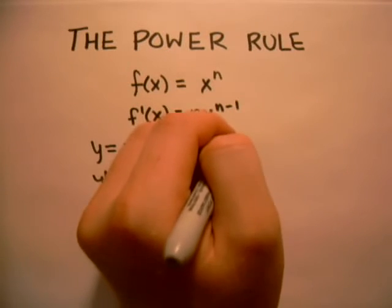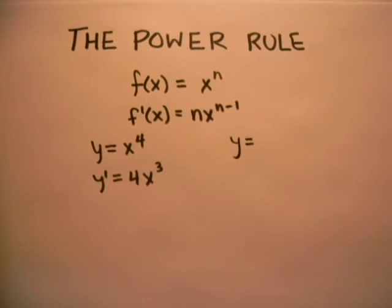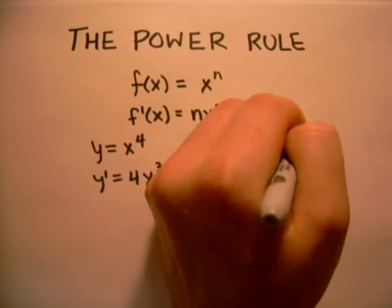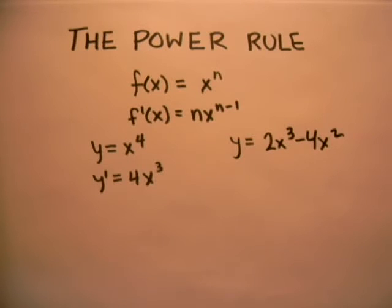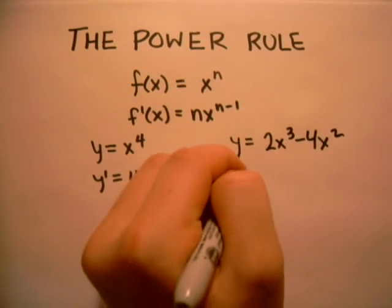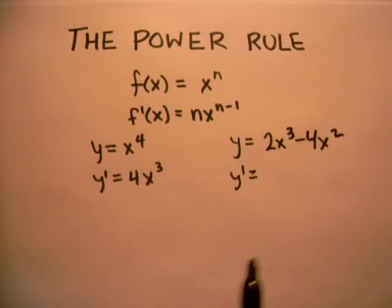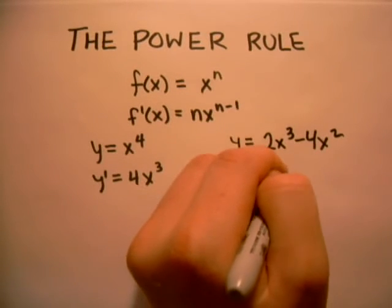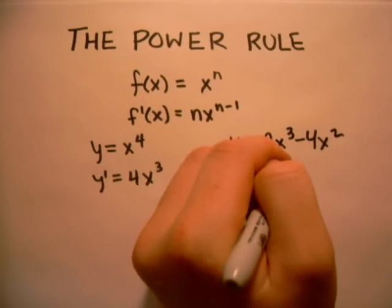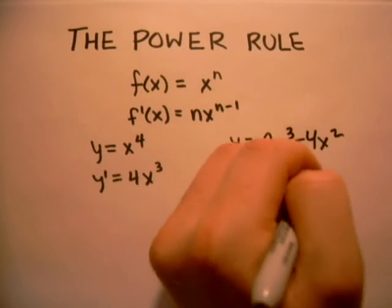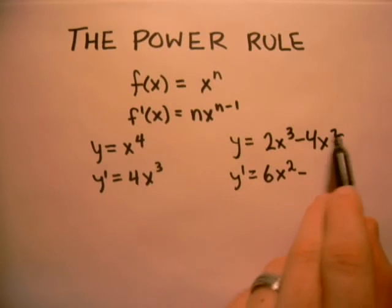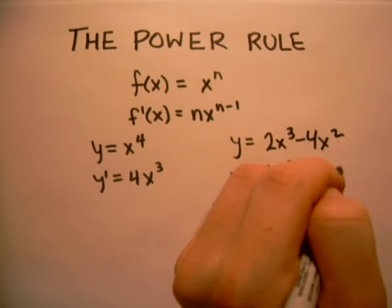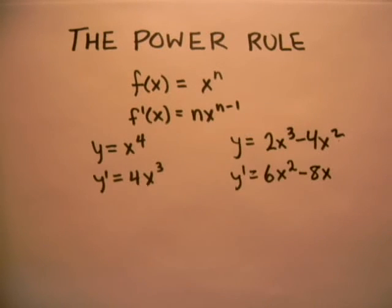Now let's do one more example. Let's say y equals 2x cubed minus 4x squared. Okay, now y prime would be, we bring the three down, multiply it by the two, so we will get 6x, and then subtract one from the three in the exponent, squared. Minus, now we bring the two down, we get 4 times 2 equals 8x to the 2 minus 1, which is just 1.